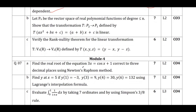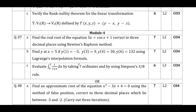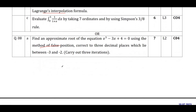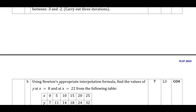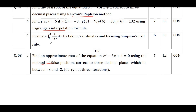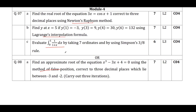Module 4 is Numerical Methods 1. Methods to study include: Newton-Raphson method, Regula Falsi method, Lagrange's interpolation method, and Newton's Divided Difference method — the last two cover unequal intervals. Question 3 will definitely be from numerical integration, which has three categories: trapezoidal rule, Simpson's 1/3 rule, and Simpson's 3/8 rule. If you study this module thoroughly, you can score 20 out of 20 marks.